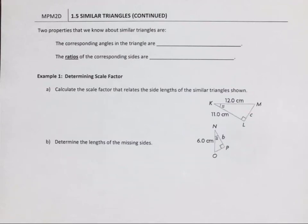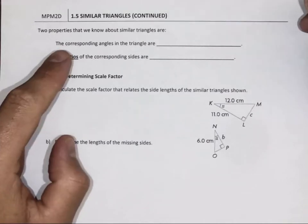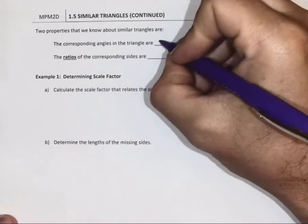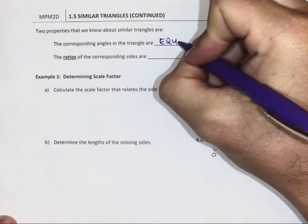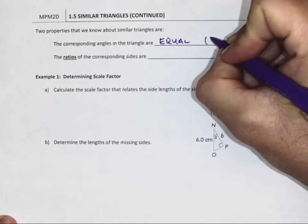Day 2 of Similar Triangles. Remembering back from yesterday, two properties that we know about Similar Triangles are: the corresponding angles of the triangle are equal. That's fancy for the same.